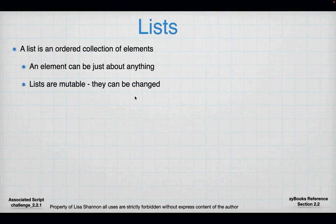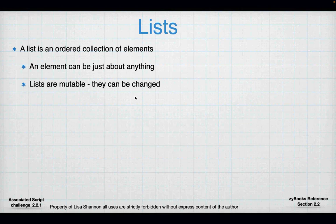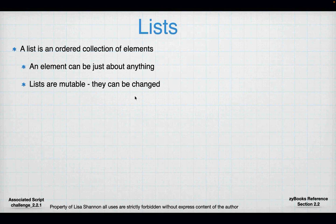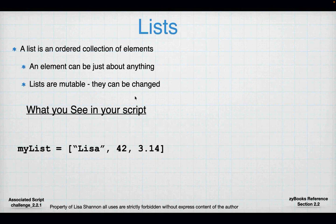So we're about to foray into lists. Why are we talking about lists? Because a string is a list — it's just a special kind of list; it doesn't have the ability to do everything that a list does. So we have to understand what is happening with lists before we can fully understand what's going on with strings. A list is an ordered collection just like a string is. You can have just about anything in a list — another list, a dictionary, an object. Python is very flexible. And lists are mutable, which means they can be changed.